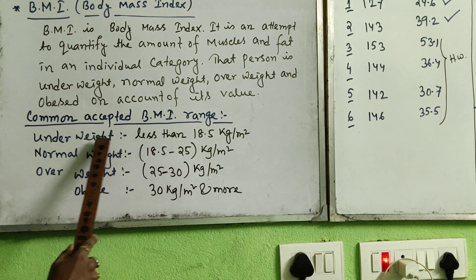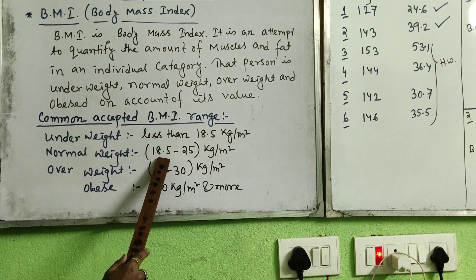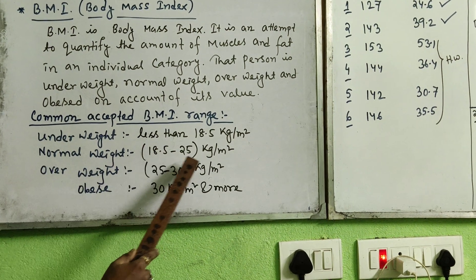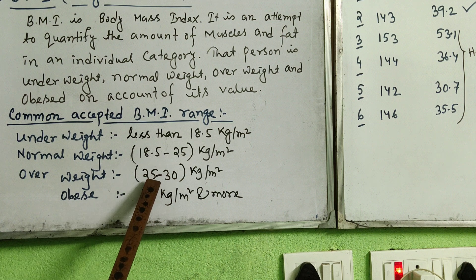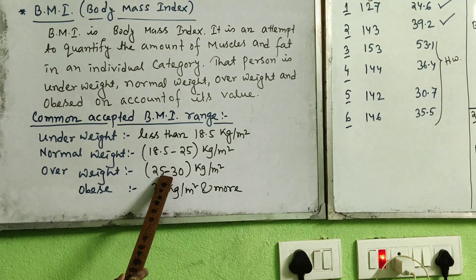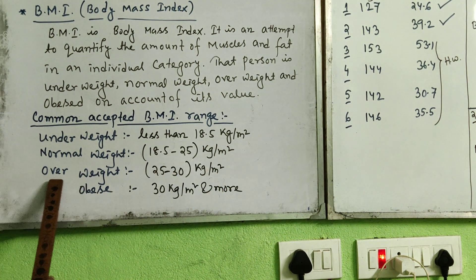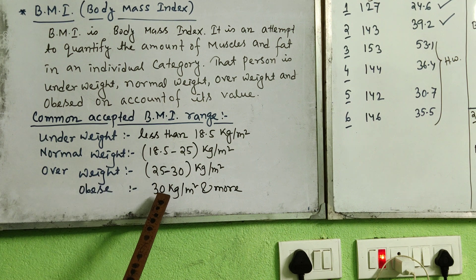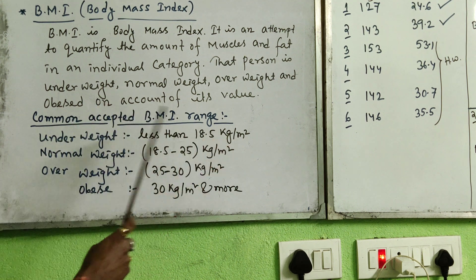If the BMI value is between 18.5 and 25, the person is called normal weight. If the value is between 25 and 30 — more than 25 but less than 30 — the person is overweight. If the value is 30 or more than 30 kg/m², the person is classified as obese. Obese is the highest category in this BMI range.